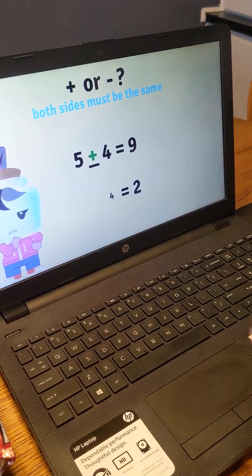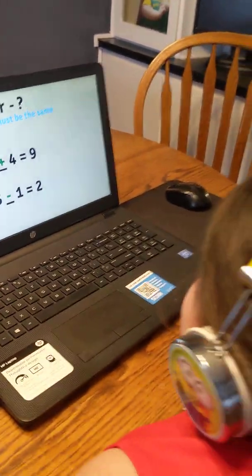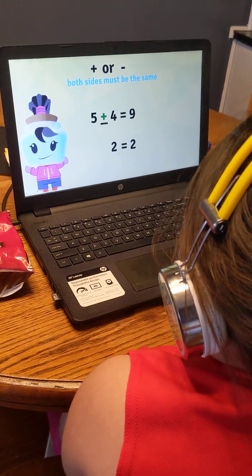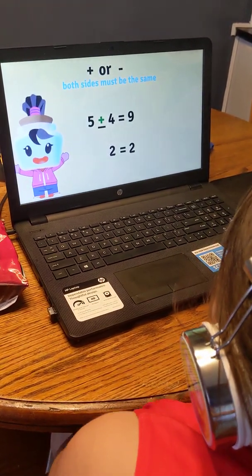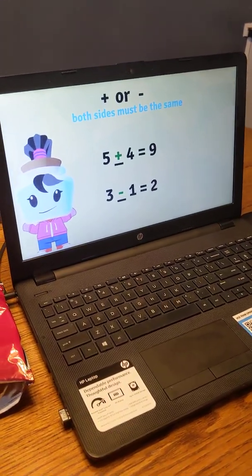If we use minus, we'll have 3 minus 1, which is equal to 2. Now, both sides of the equal sign are the same. So, minus is the correct answer.